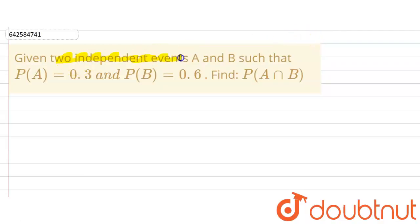Hello everyone, the question is: given two independent events A and B such that P(A) is equals to 0.3 and P(B) is equals to 0.6, and we have to find P(A intersection B).